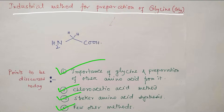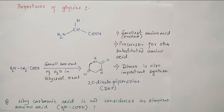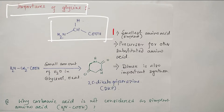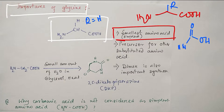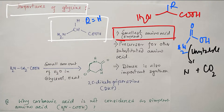Why is glycine important? This is the biggest motivation to study its preparation. Glycine is actually the smallest amino acid. The general formula of an amino acid is CO₂H, NH₂, and R. In the case of glycine, R equals hydrogen, making it the smallest amino acid. Note that carbamic acid is not considered an amino acid because it is unstable and decomposes to produce CO₂ plus ammonia.